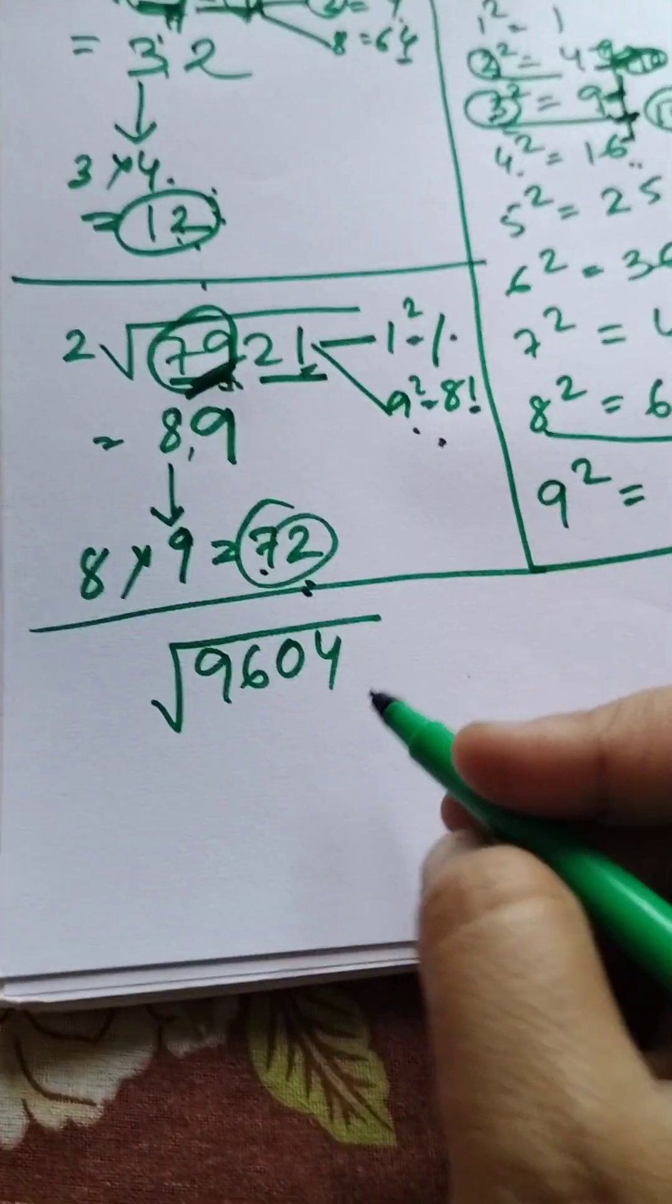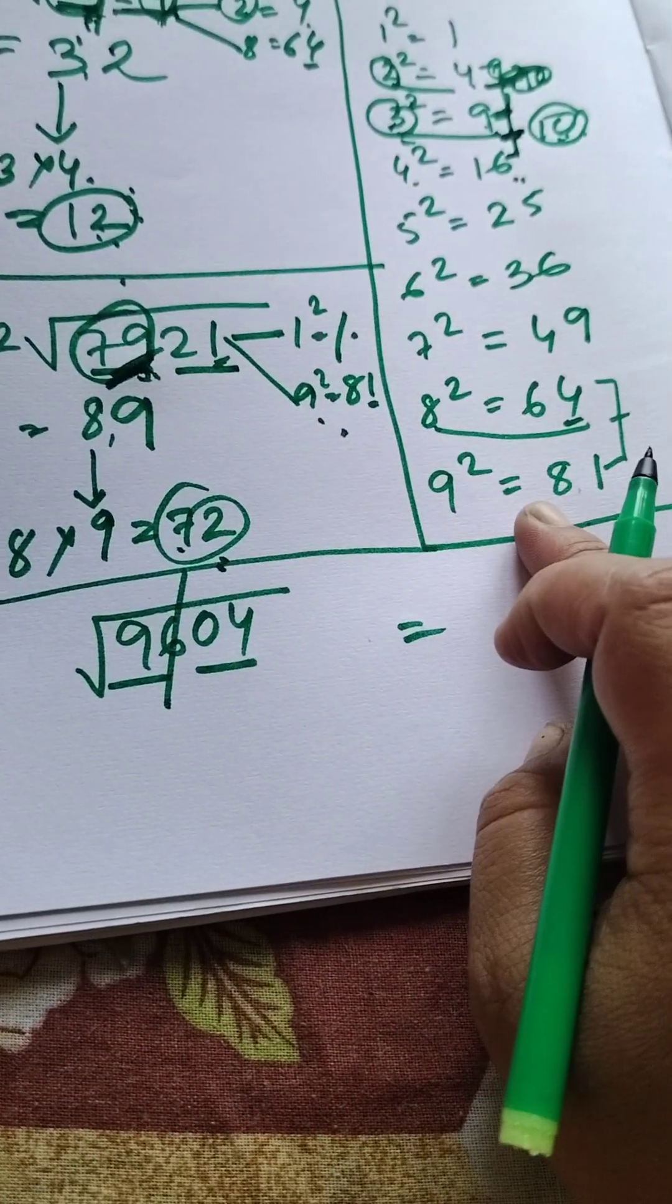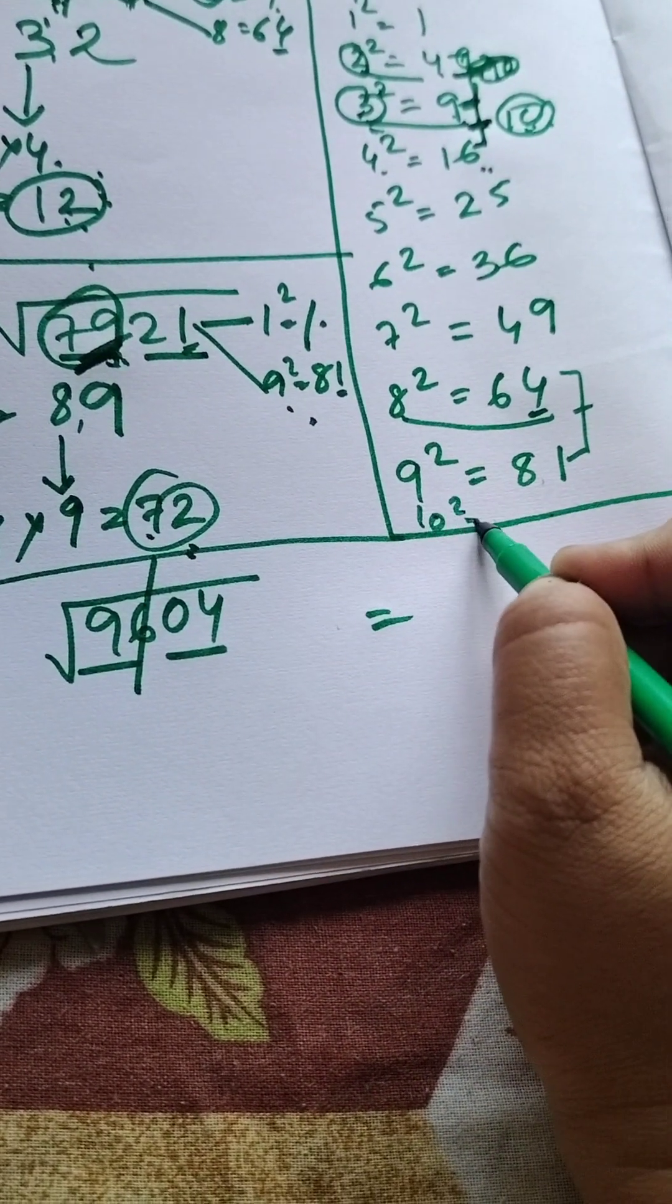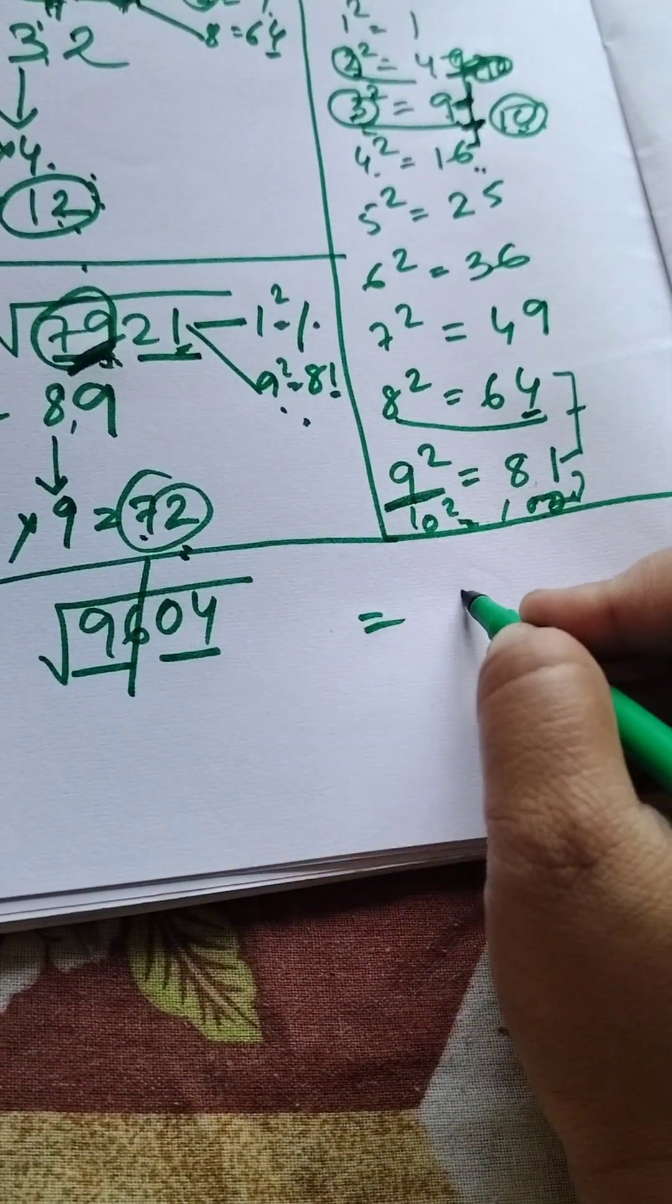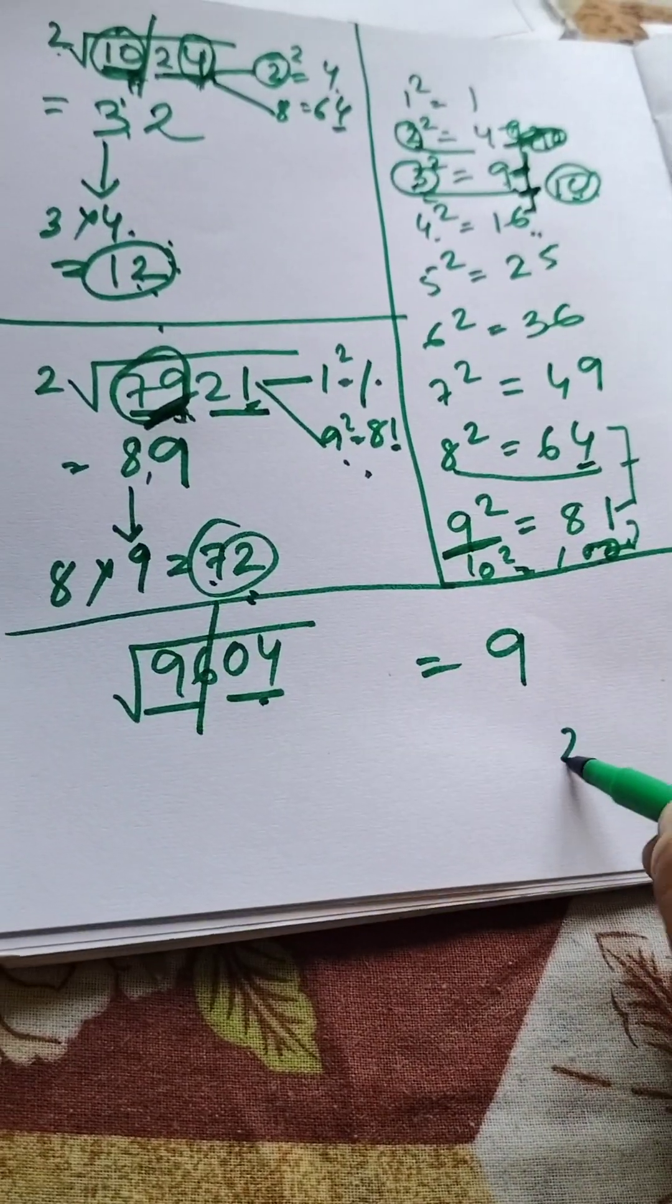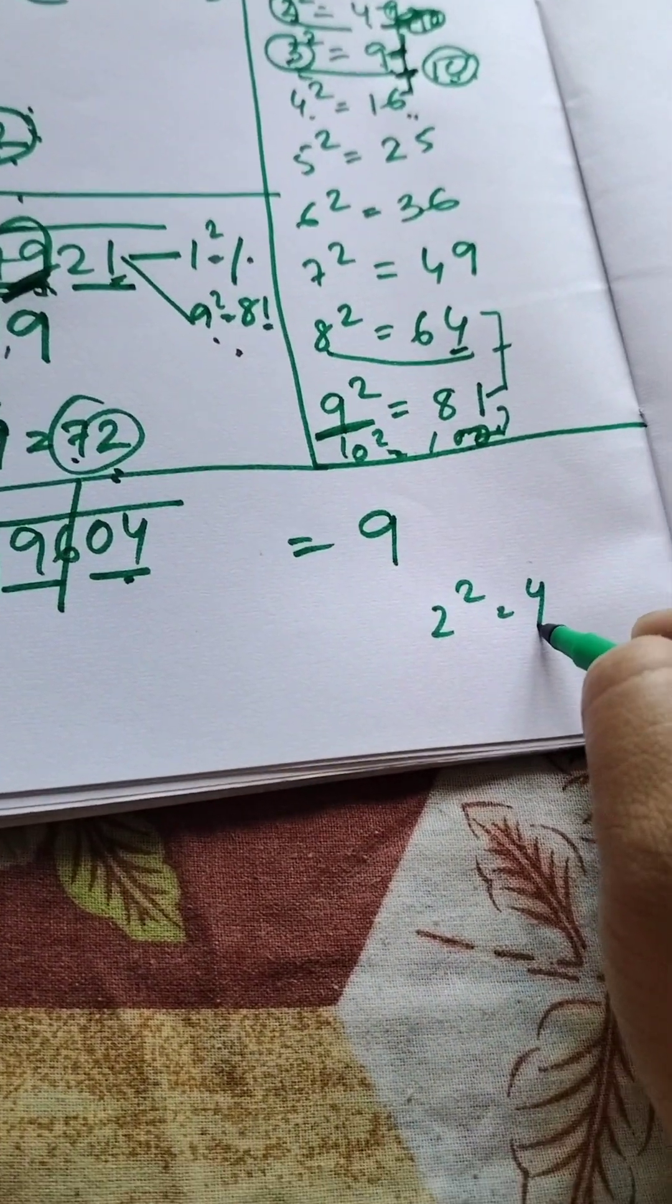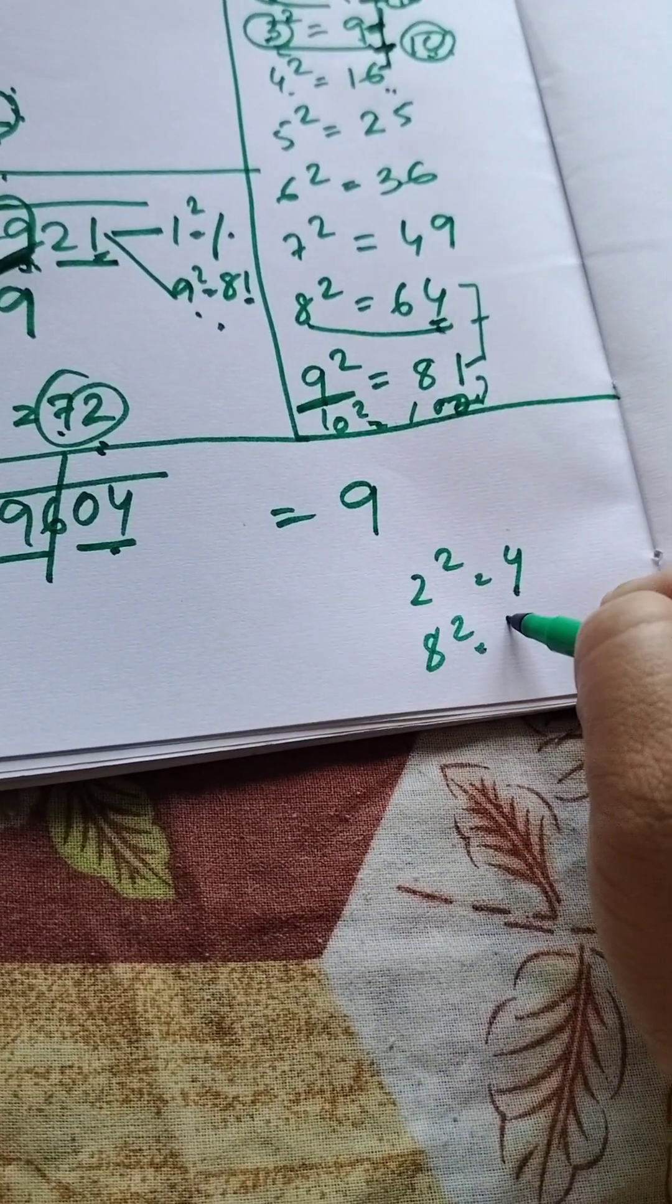Next, 9604. Take a pair, 96. 9 squared, then 10 squared. We will write 9. Now where is 4? Where is 4? 2 squared. And 64, 8 squared, 64.